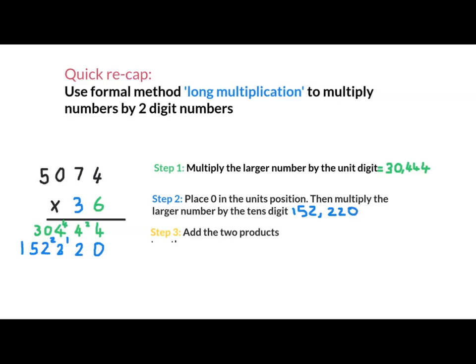All that's left to do now is add the 2 products. Step 3. 4 and 0, 4. 4 and 2, 6. 4 and 2, 6. 0 and 2, 2.